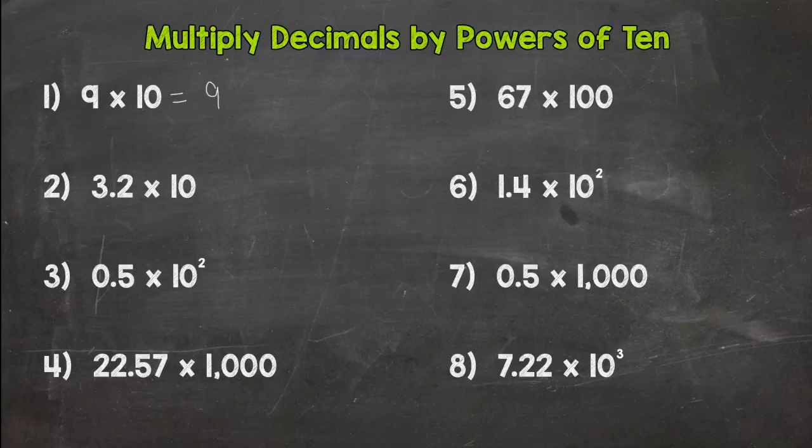So 9 times 10. We know 9 times 10 is 90. And like we talked about when we multiplied whole numbers by powers of 10, we used zeros to push that 9 one place to the left to make its value 90. Because we started with a 9, and we multiplied by 10. So we moved the 9 one place to the left from the ones place to the tens place using a 0 to change the value of that 9.